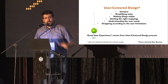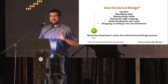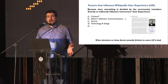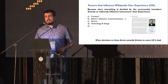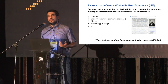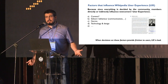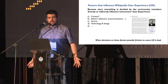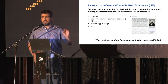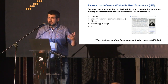This is what we do in every technological project — video games, computer software — and this is what would work as well in Wikipedia. So what are the factors that influence Wikipedia user experience? There are so many, which is very good, because it means we can improve user experience by improving very little pieces of the product, of the creation, starting by the content itself.